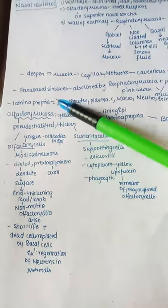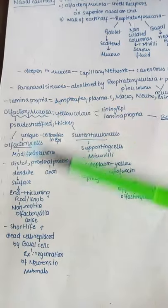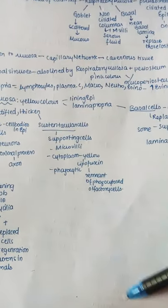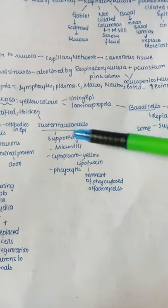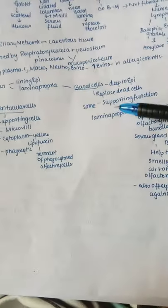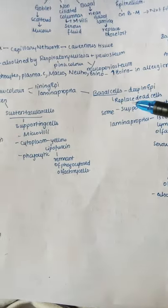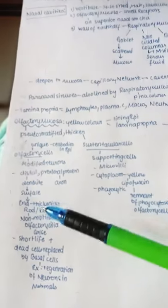The types of cells in the olfactory mucosa are: olfactory cells, sustenticular cells, supporting cells, and basal cells.